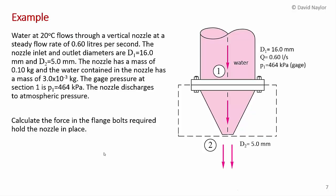This is almost as complex as they get. Water at 20 degrees C flows through a nozzle at a steady flow rate of 0.60 litres per second.